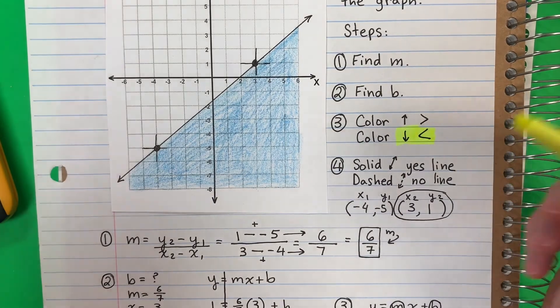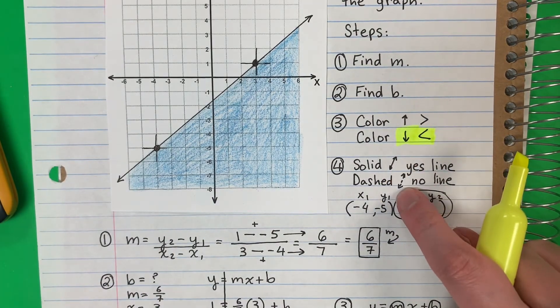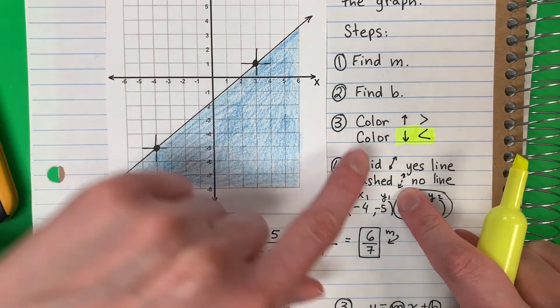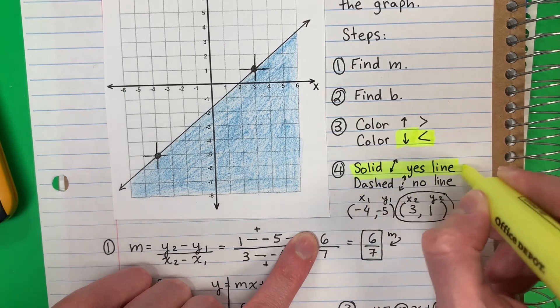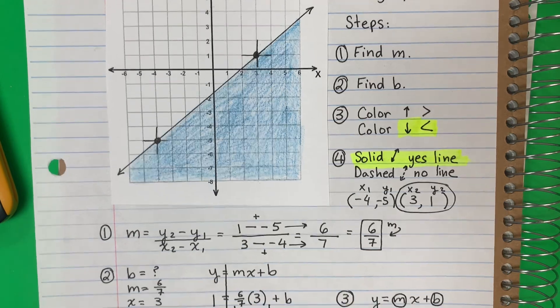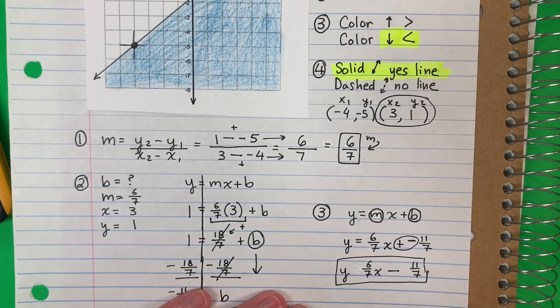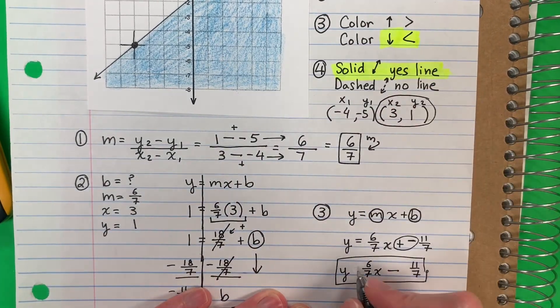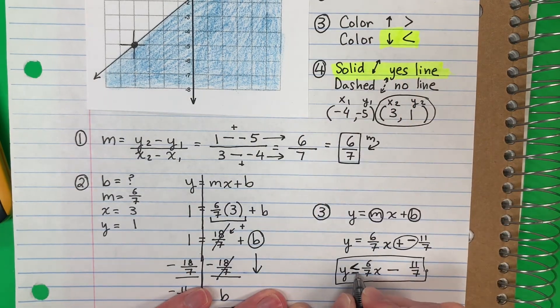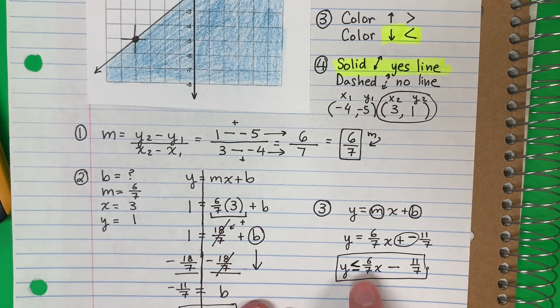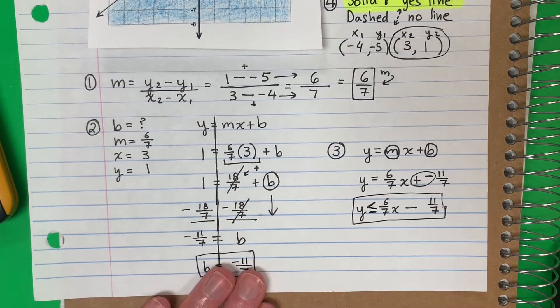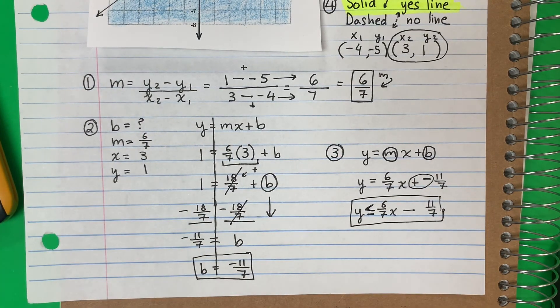And then I need to decide solid or dashed. This is solid, so I will do yes line. I'm going to use less than with the line, less than or equal to. Con línea or equal to. So this is my answer. Remember you have to be careful, don't use the equal if you have like this. Thank you for watching and make sure that you copy all of this.